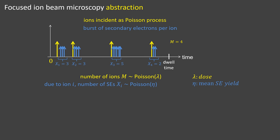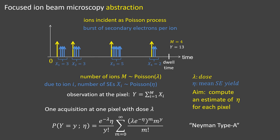We model the number of secondary electrons per ion also as Poisson distributed with mean eta, where eta is the expected number of emitted secondary electrons per ion. This gives us a model for the total number of secondary electrons, which we call Y. Our goal here is to compute an estimate of eta for each pixel. We can write the probability mass function for Y at one pixel with dose lambda, which we call a Neumann type A distribution.